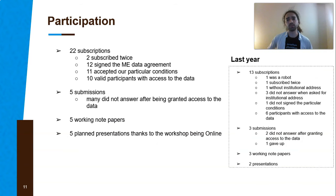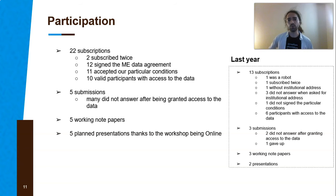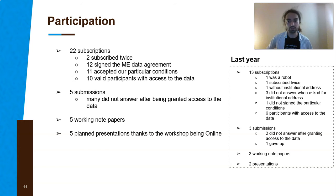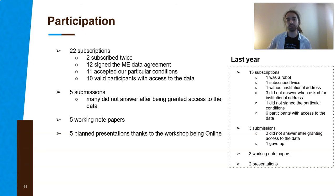This year, the number of participants increased compared to last year. We had 22 subscriptions against 13 last year. However, we had only five submissions, though that still represents an increase — we had only three last year. We are happy because all submissions provided a working paper and are planning to present at the workshop. We noticed that two people subscribed twice, and 10 were valid participants with access to the data, though five of those did not respond after receiving access.